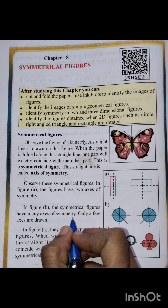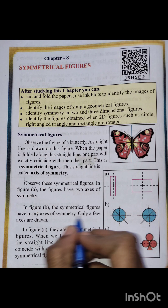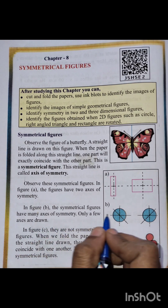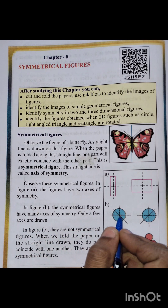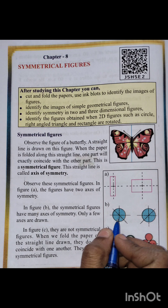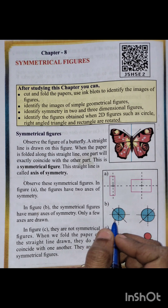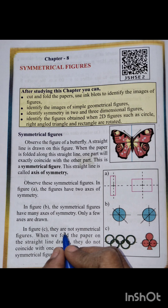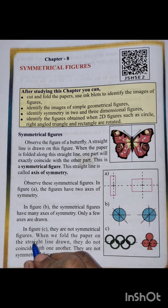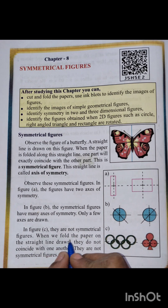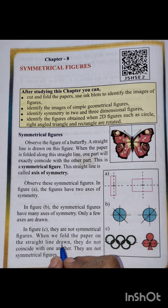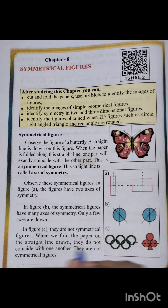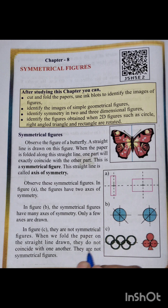In figure B, the symmetrical figures have many axes of symmetry; only a few are drawn. For a circle, you can draw any number of lines of symmetry. In figure C, they are not symmetrical figures — when we fold the paper on the straight line drawn, the parts do not coincide with one another, so they are not symmetrical figures.